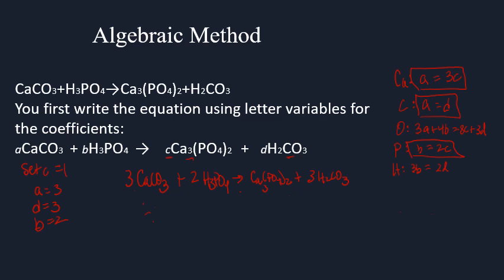You can solve these problems using either the algebraic method or the data table method. Using the data table for verification: one phosphate in H3PO4 versus two in the product, so the coefficient for H3PO4 is two, giving six hydrogens versus two — so the coefficient for carbonic acid must be three. Three carbonates on the reactant side means a coefficient of three for calcium carbonate. Either way you get the same answer, but the algebraic method will definitely go faster once you're used to it.